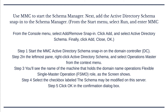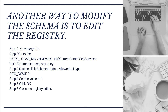Step 1 — Start the MMC Active Directory Schema snap-in on the domain controller. Step 2 — In the leftmost pane, right-click Active Directory Schema and select Operations Master from the context menu. Step 3 — You will see the name of the machine that holds the Domain Name Operations FSMO role. Step 4 — Select the checkbox labeled 'The schema may be modified on this server.' Step 5 — Click OK. Alternatively, edit the registry: Start Regedit, go to HKEY_LOCAL_MACHINE\SYSTEM\CurrentControlSet\Services\NTDS\Parameters, double-click SchemaUpdateAllowed (REG_DWORD), set the value to 1, click OK, and close the registry editor.